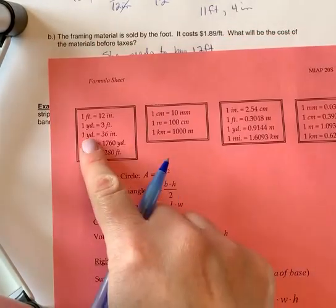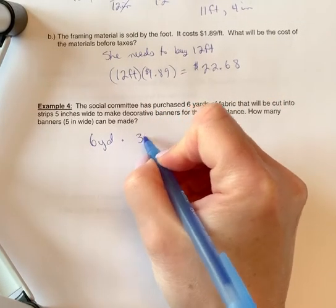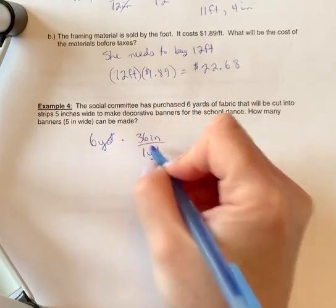So yards compared to inches, one yard is 36 inches. I want inches to remain, so I'm going to divide by new unit of inches over old unit so that the old units cancel out.